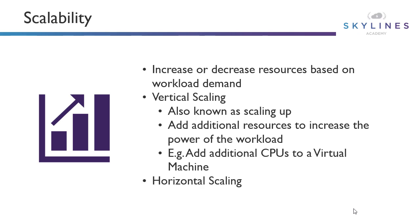Horizontal scaling is the other type, and it's also known as scaling out. This is where instead of adding additional CPUs to that specific machine, we might add additional machines, additional containers, spin up additional functions — things like that.